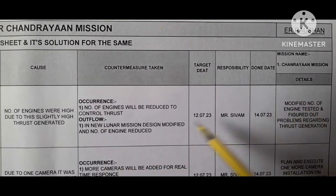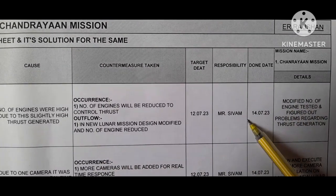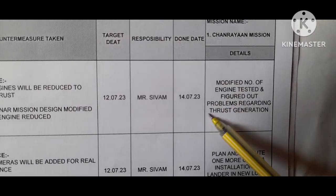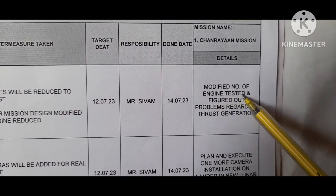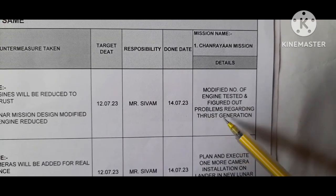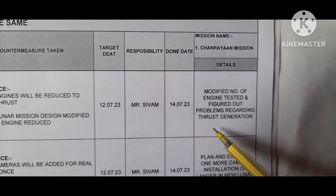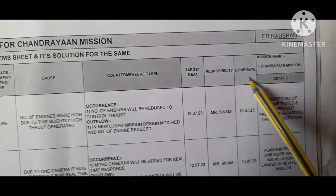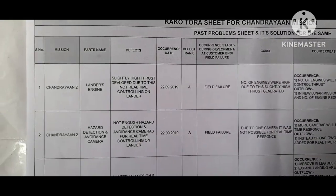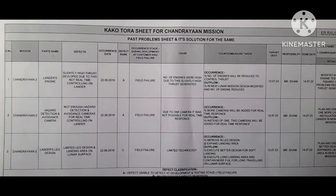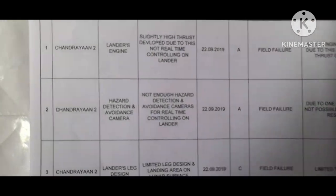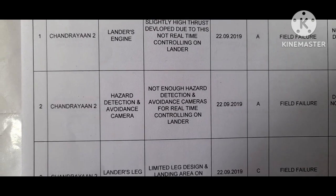As you know, Chandrayaan 3 was designed and modified, and the number of engines was reduced. Target and responsible persons are given here, along with the target completion date. Details of modification: modified number of engines tested and figured out problems regarding thrust generation. This is the first problem entry.